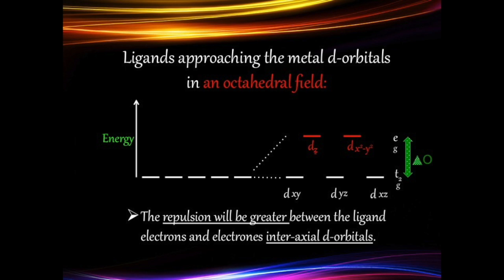The energy difference between the two sets of orbitals is referred to as delta-octahedral. The axial orbitals having higher energy form the eg orbitals, and the interaxial orbitals having lower energy form the t2g orbitals.